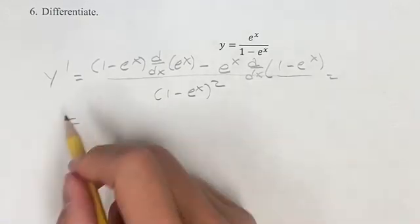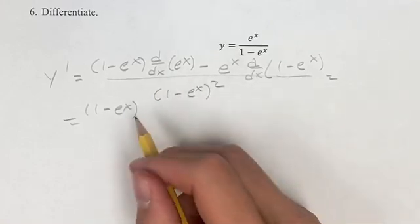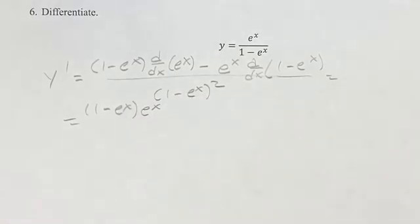Going through and calculating what these derivatives are, we have 1 minus e to the x times the derivative of e to the x, which is just e to the x. Its derivative is itself.